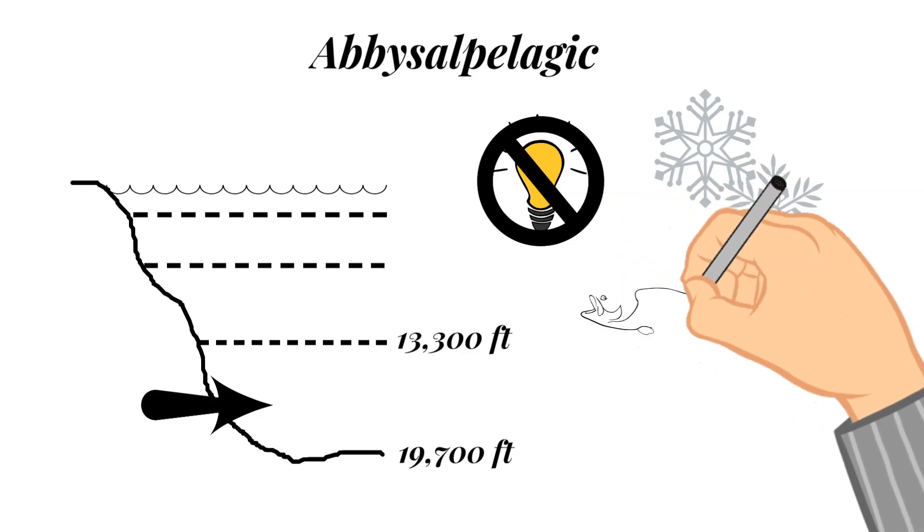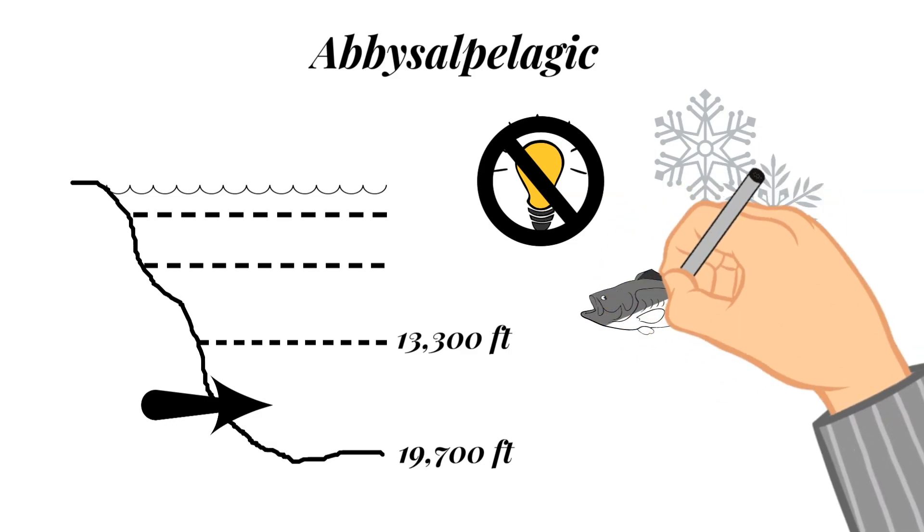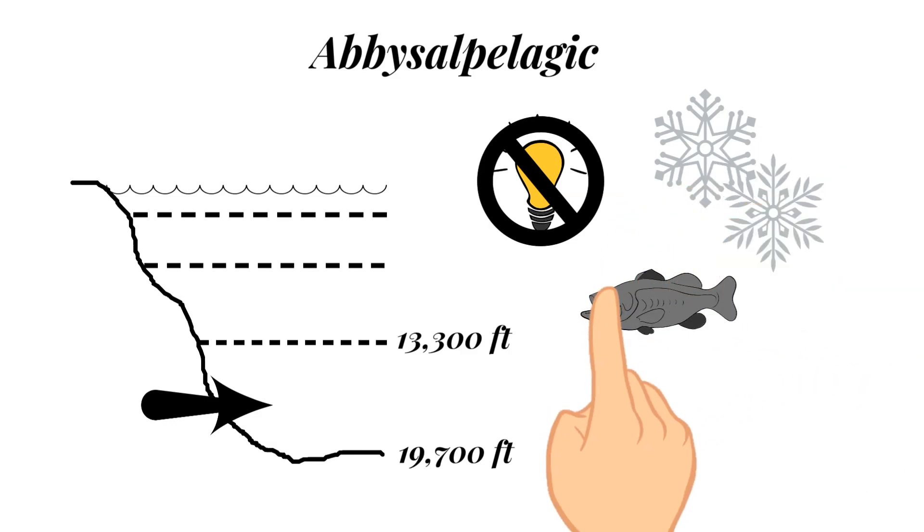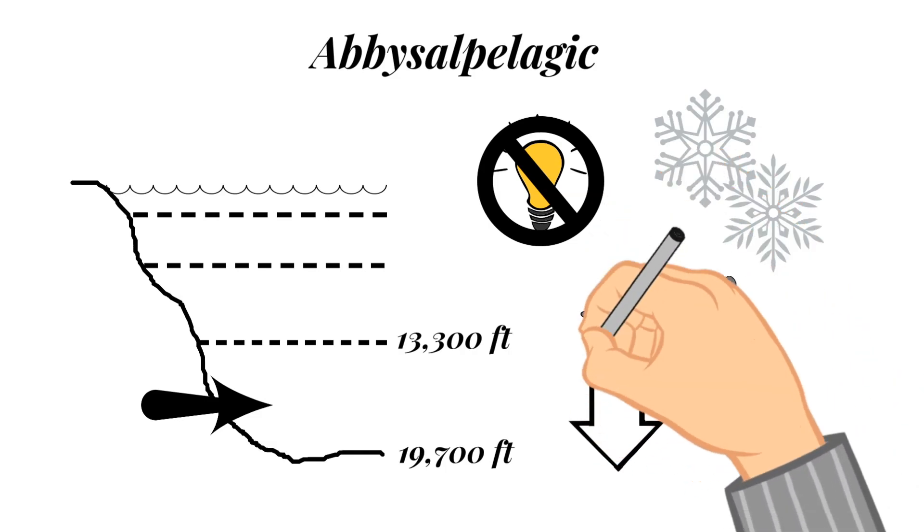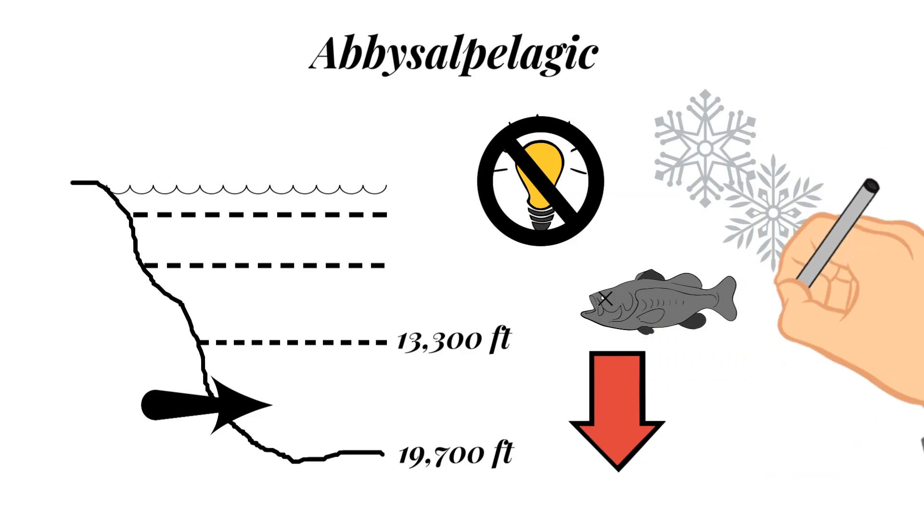Creatures that live at these depths feed on things that fall from the surface. And some of these creatures have adapted to live around these things called sulfur vents because these vents spew heat into the water. The beginning part of the name of this zone, abyss, comes from the Greek word meaning no bottom because it was originally thought that the ocean was bottomless.